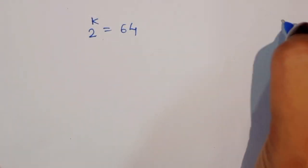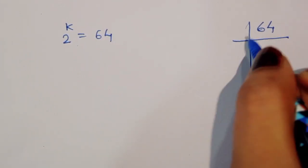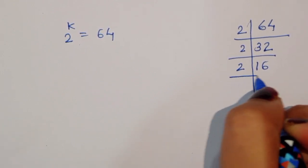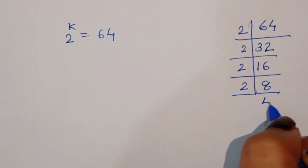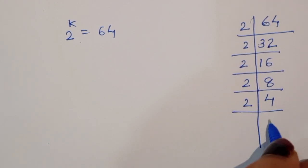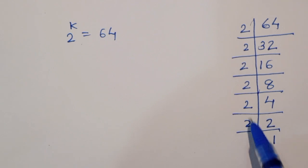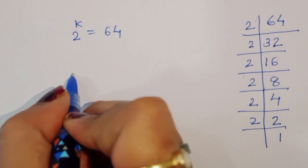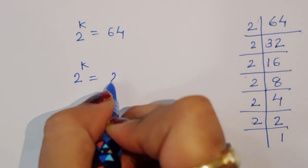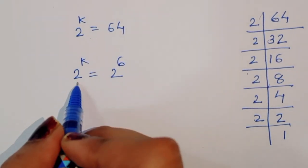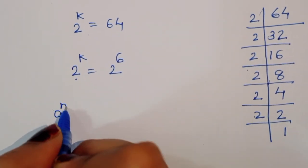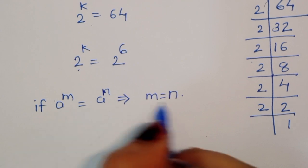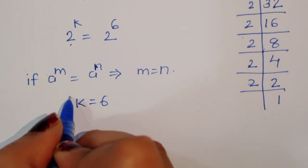Now 2 power k equals 64. Factoring 64 gives us 2 to the power 6. So 2 power k equals 2 power 6. Since the bases are the same, using the formula a power m equals a power n implies m equals n, we get k is equal to 6.